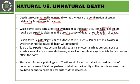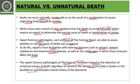Forensic experts or forensic pathologists have this type of knowledge. The forensic panel is able to assess whether a person's death is due to natural or unnatural causes. To do this, experts must be familiar with external stresses, poisons, noxious substances, and environmental diseases, as well as the subtle ways in which these stressors affect the body. The forensic panel is trained in the detection of unnatural causes of death, regardless of whether the identity of the body is known, doubtful, or questionable.